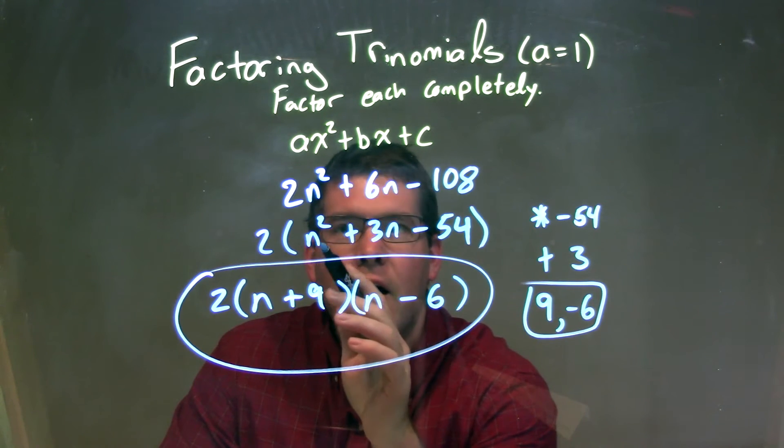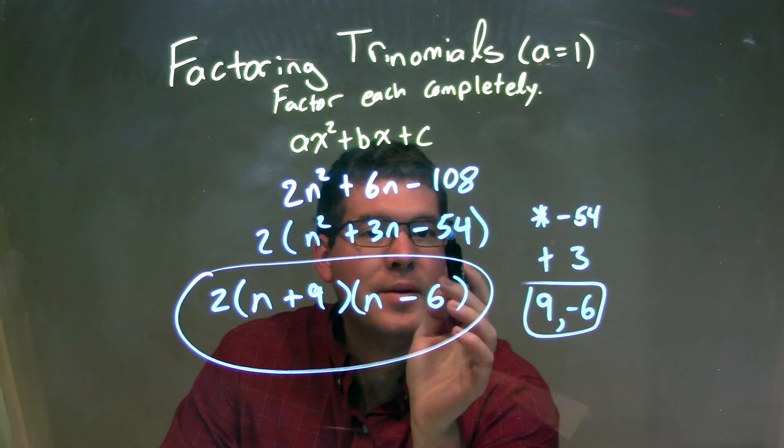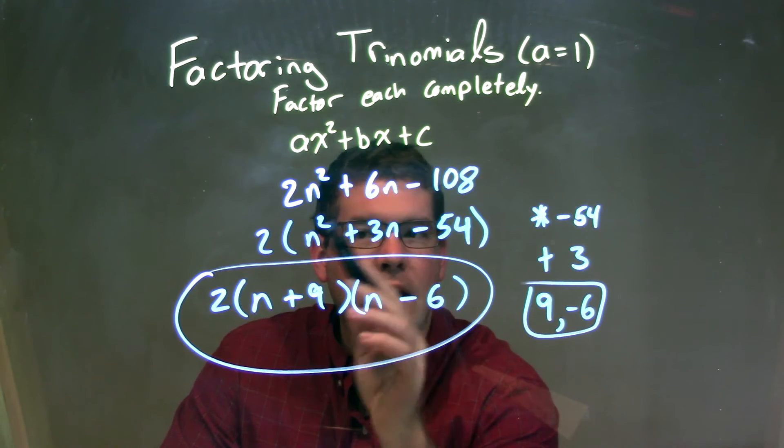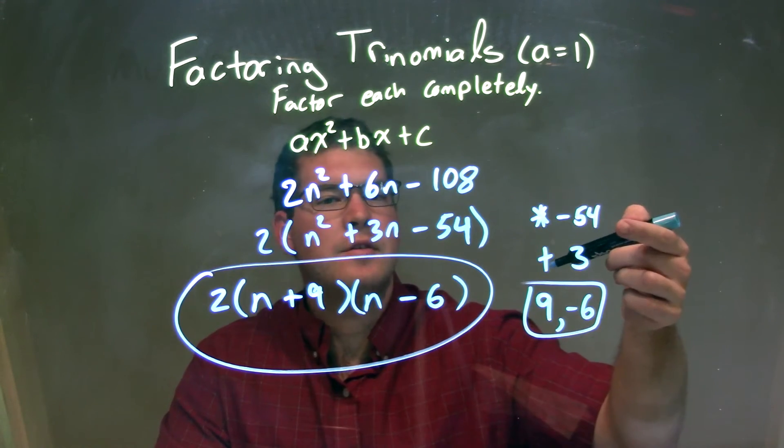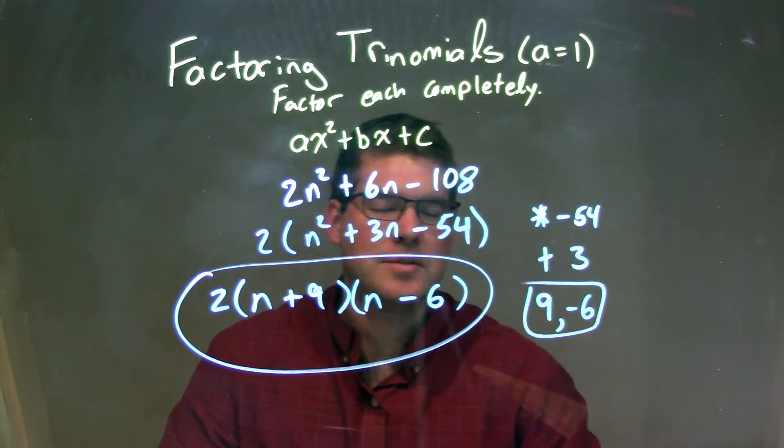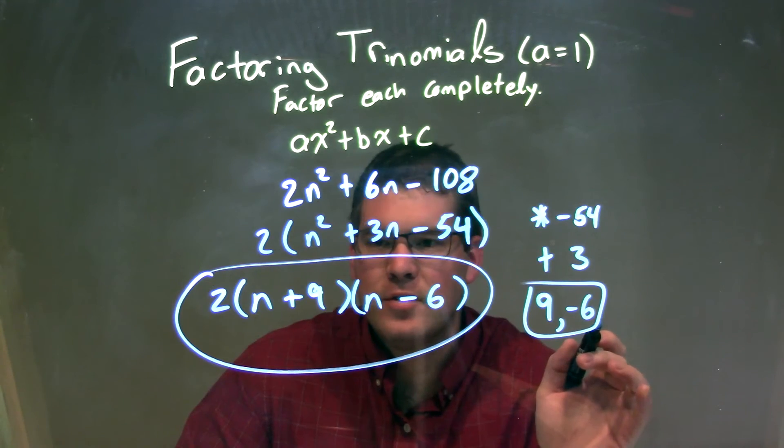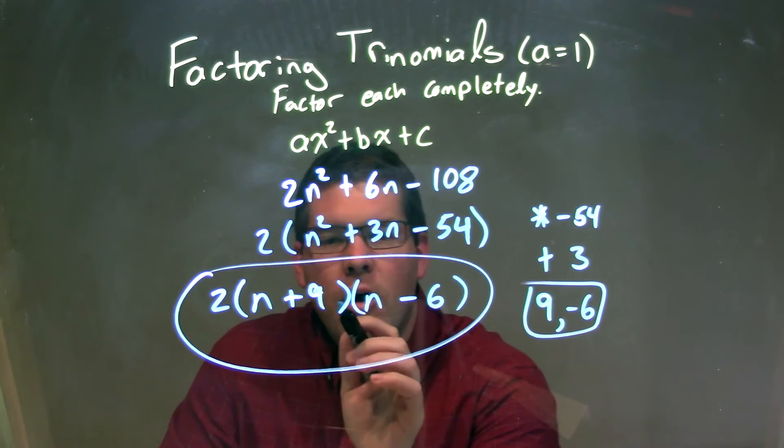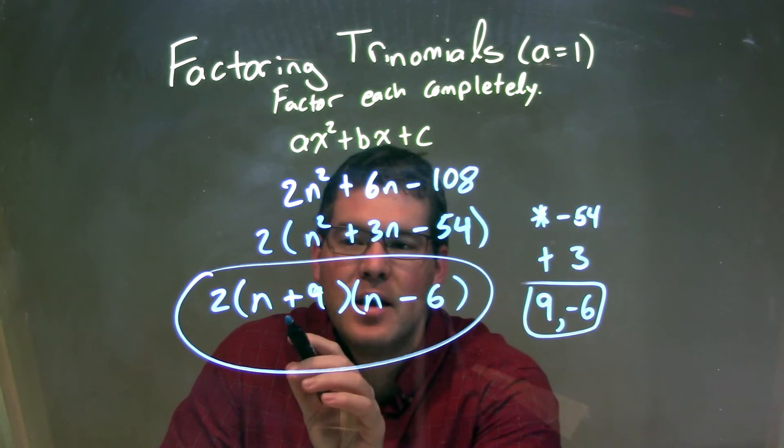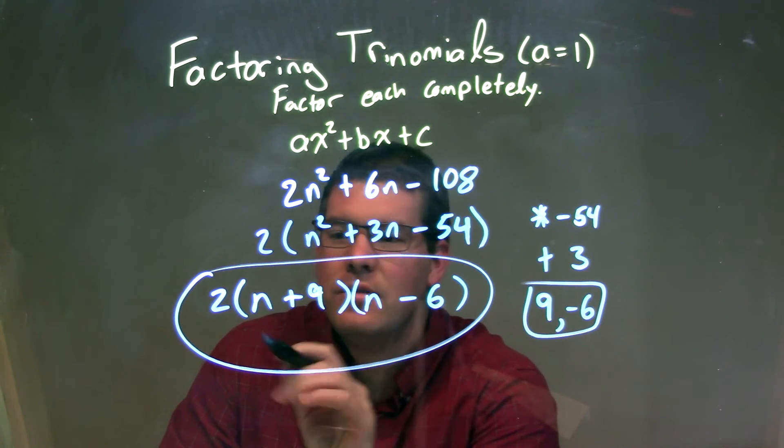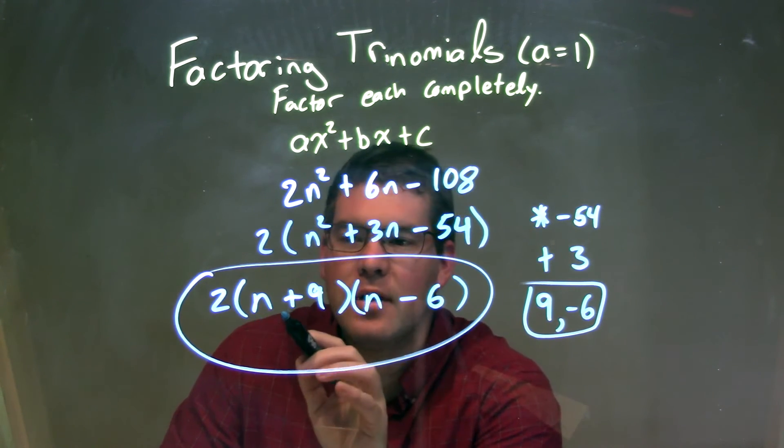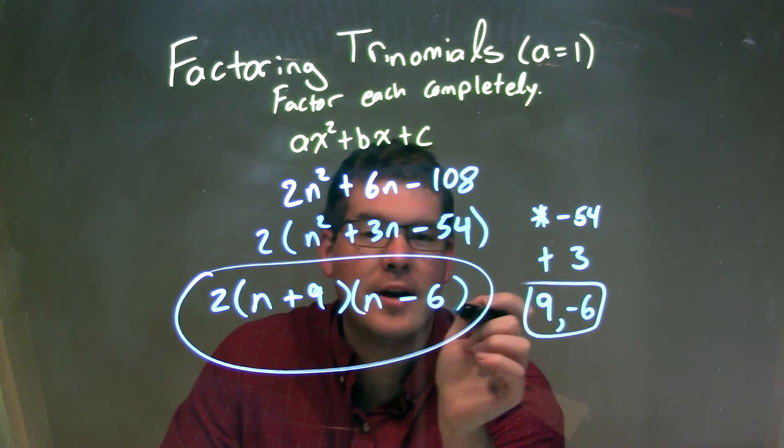Well, now we have an ax squared plus bx plus c form right there inside the parentheses, and our a value is 1, so we ask ourselves the question, what multiplies to our c or negative 54, and adds to our b value, which is positive 3. Those two numbers are 9 and negative 6. So when I factor this out, I have my two parts there. They just go there next to the n's, and so my final answer is 2 times n plus 9 times n minus 6.